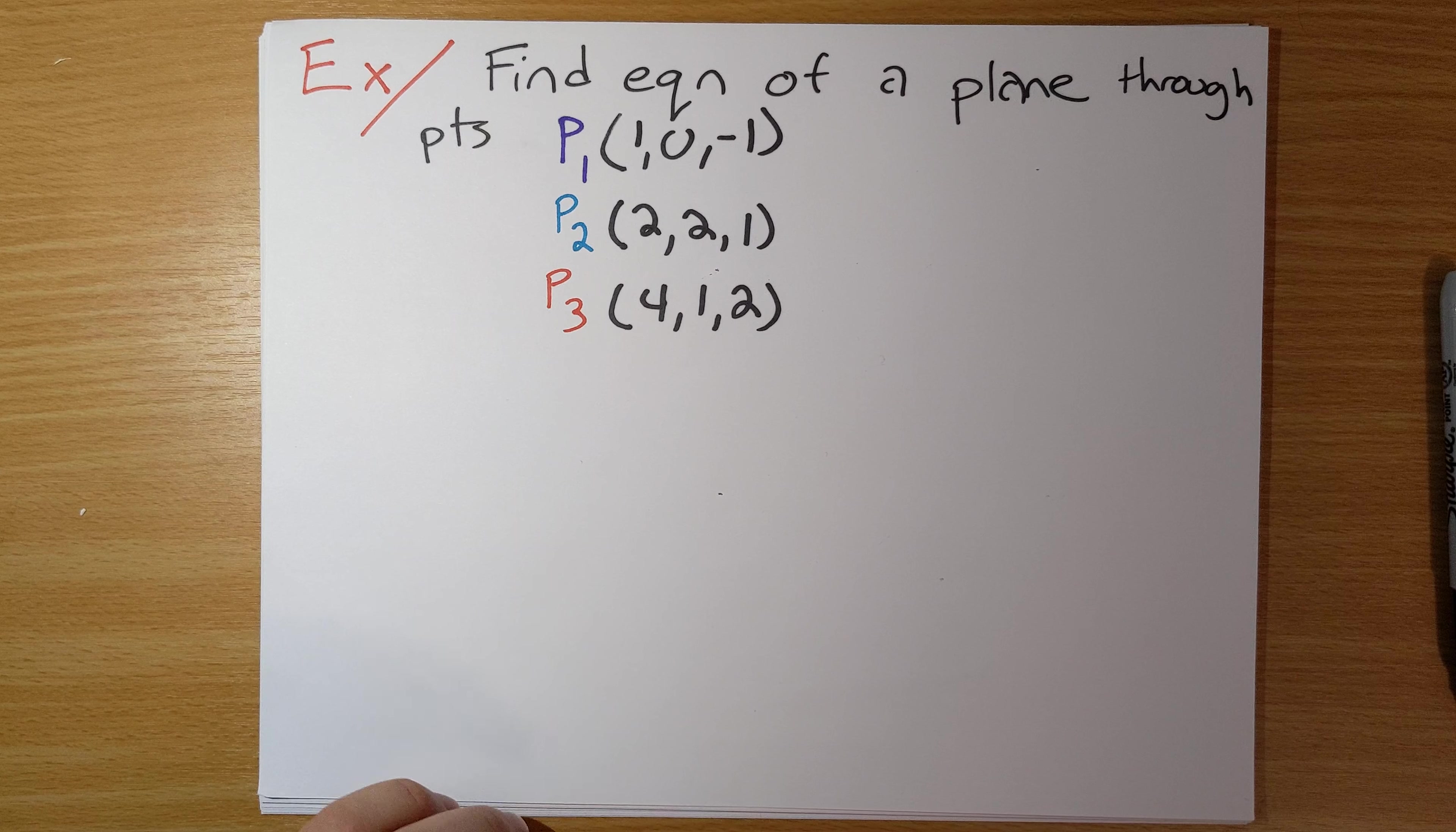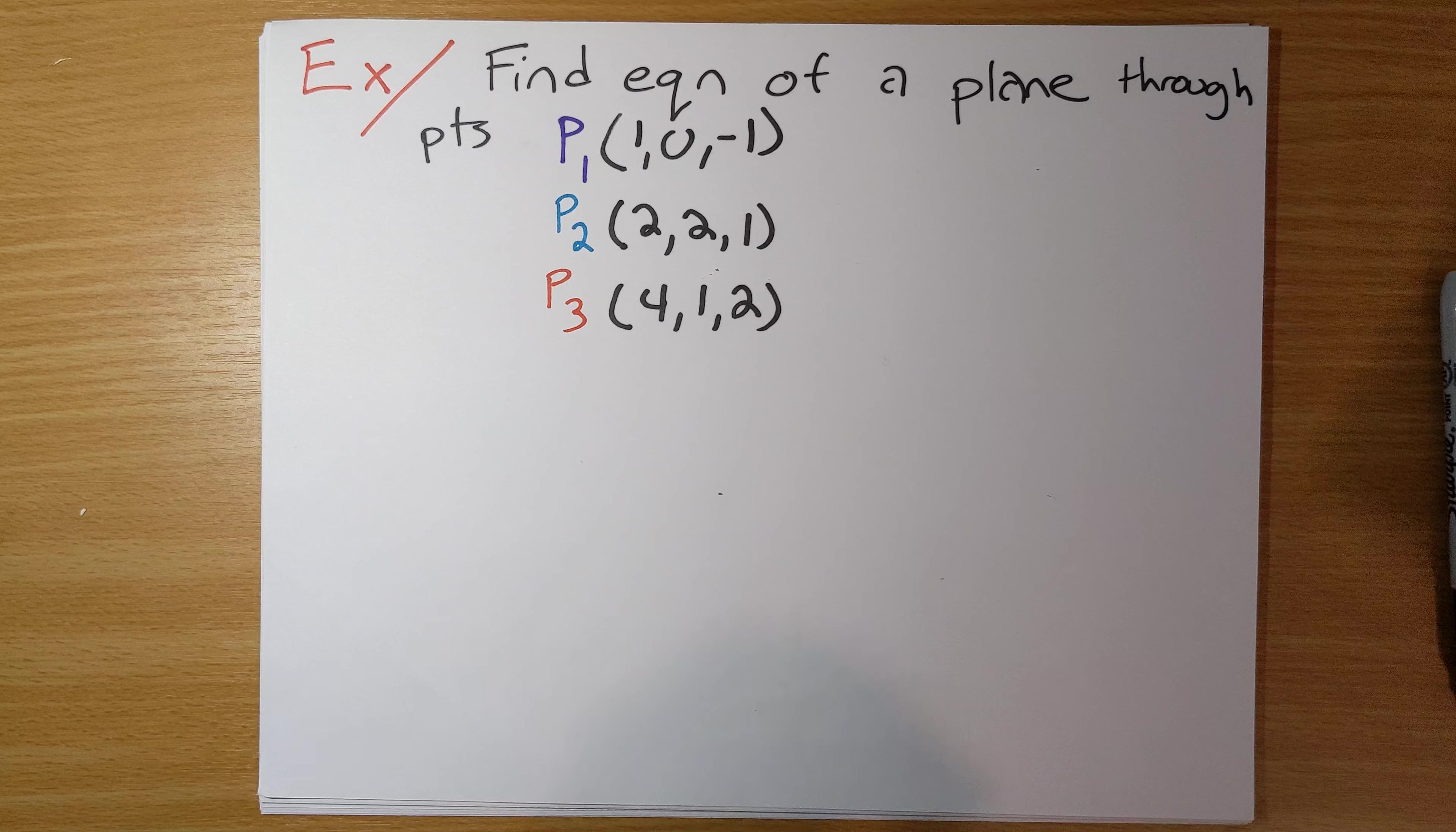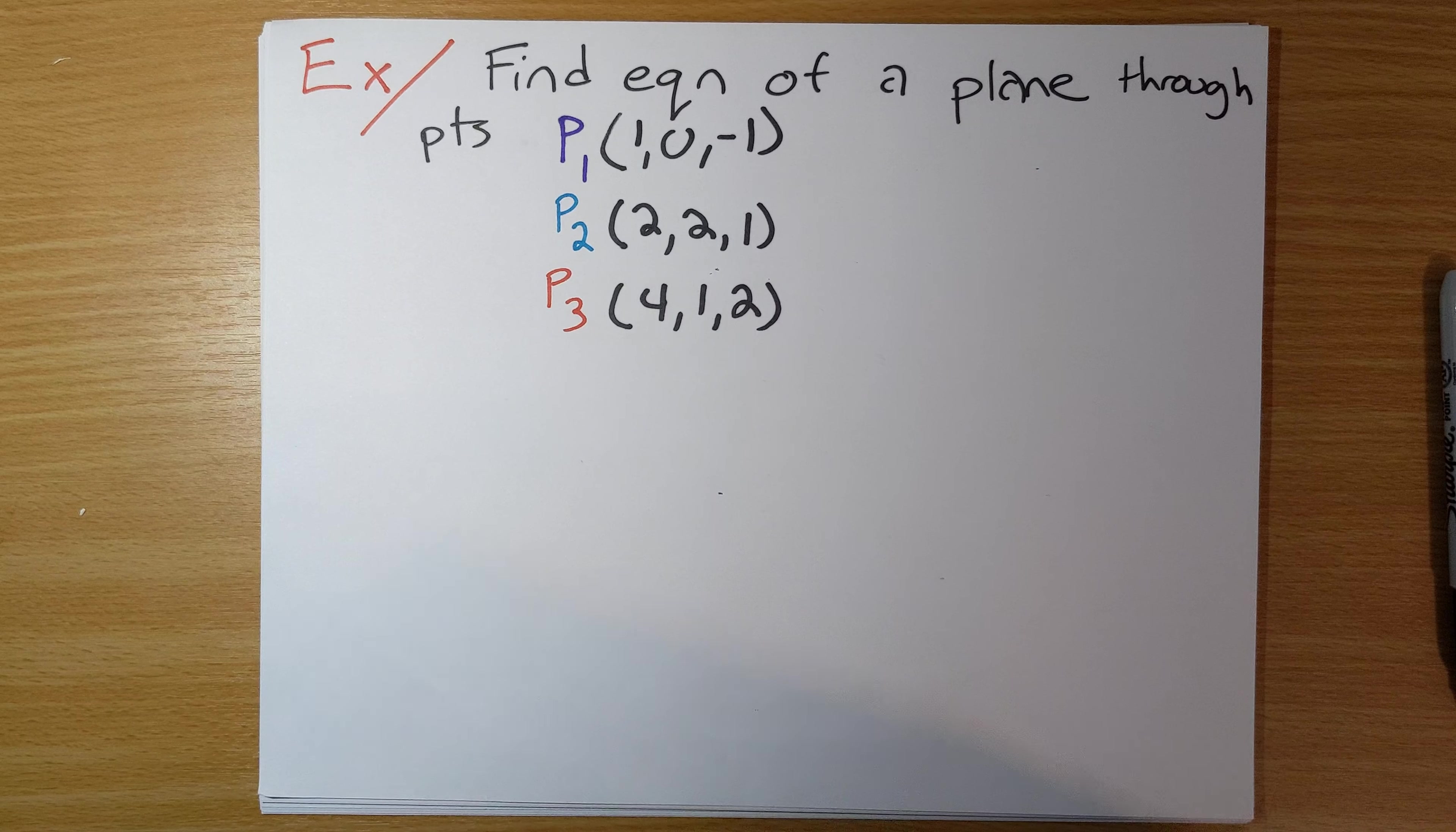So, let's do an example of this, keeping this in mind. Find an equation of a plane through points (1,0,-1), (2,2,1), and (4,1,2).